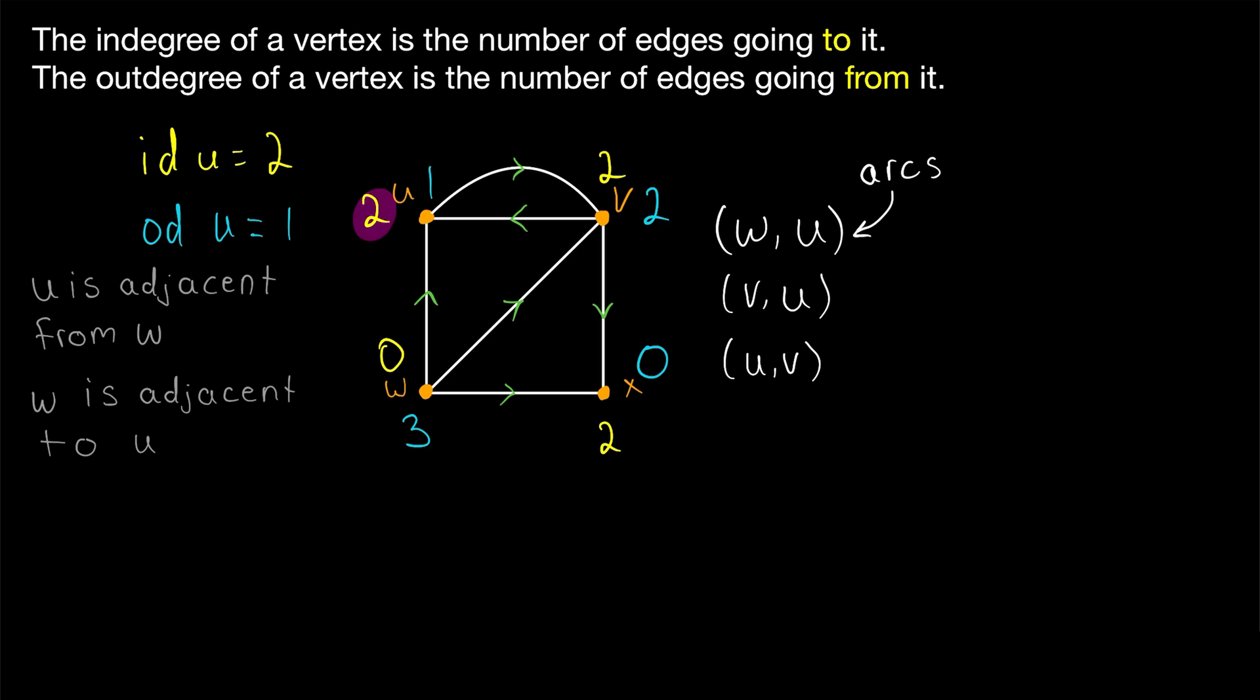Now, here's a fun exercise for you. Try adding up the in-degrees of all of these vertices. Then try adding up all the out-degrees of these vertices. What do you notice? I encourage you to make a conjecture about what you notice and try to prove it. We'll talk more about this when we prove the first theorem of directed graph theory. I'll leave a link to the lesson on that topic in the description.